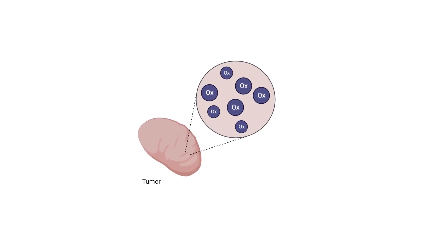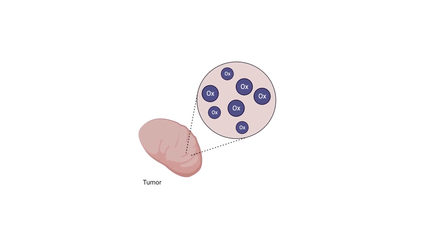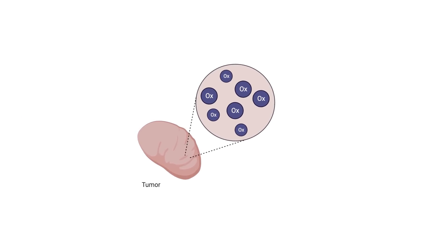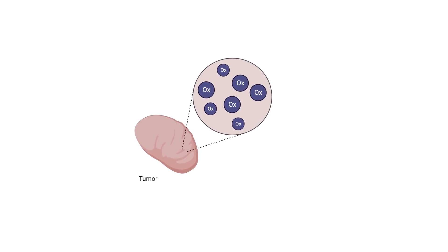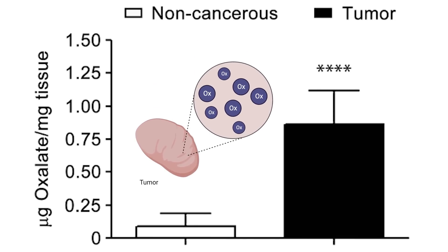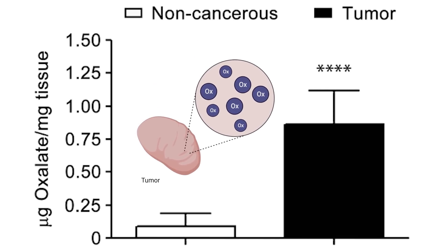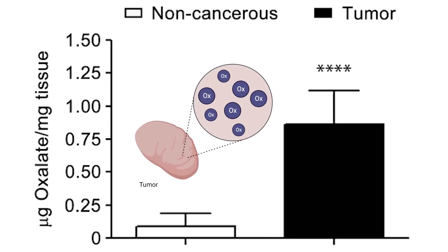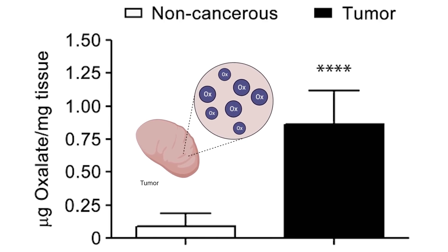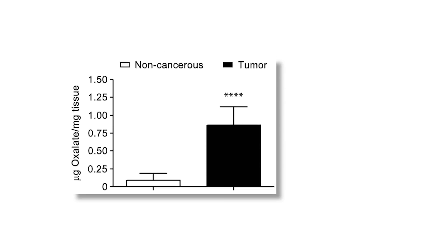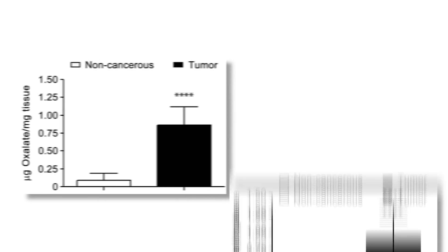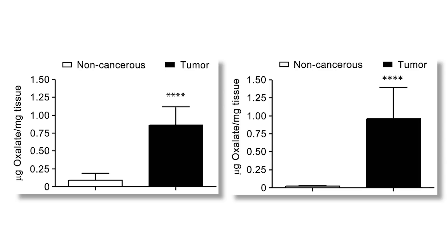The next piece of data showed the amount of oxalates found in the tumor itself. If you were to take out the tumor and measure the amount of oxalate molecules inside, we see a comparison of normal mouse breast tissue on the left and cancerous breast tissue on the right — and there is a clear difference in the amount of oxalate stored. Does this also bear out in humans? The answer is clear: human breast cancer also contains higher concentrations of oxalates.